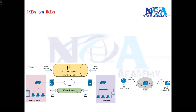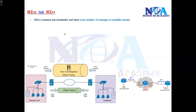We'll compare IKE V1 and IKE V2 to see why IKE version 2 is better than version 1 and what advantages we get. The first advantage is that IKE V2 consumes very less bandwidth and the messages are processed faster, mainly because the number of messages exchanged between the two peers are less in number.